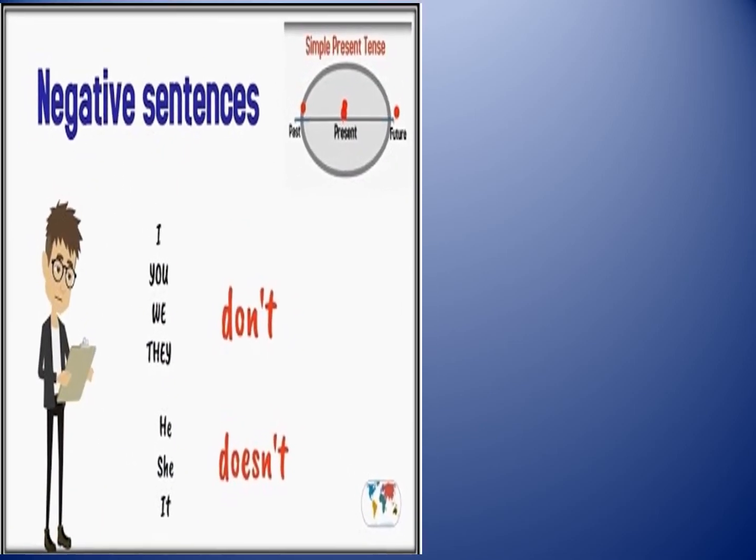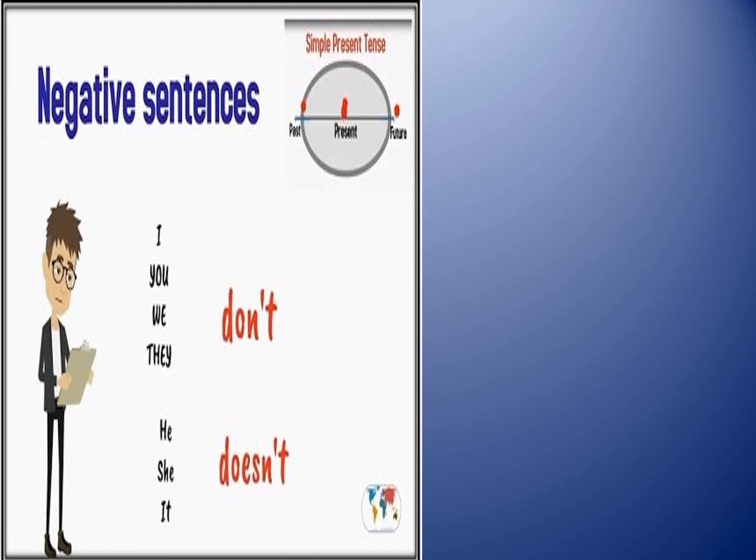This was our first part of the present simple lesson. Now let's move to the second part: the negative form. In the negative form, we must use NOT — specifically DO NOT (DON'T) and DOES NOT (DOESN'T). I, you, we, and they hate -s, so they use DON'T. For he, she, and it, which like -s, we use DOESN'T.